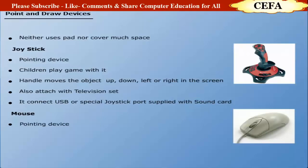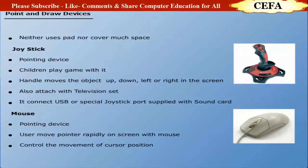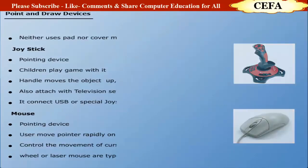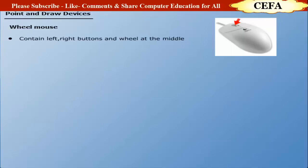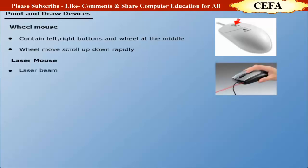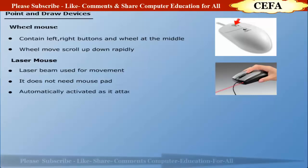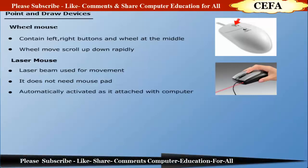Mouse is a pointing device. A user can move the pointer very rapidly on the screen with the help of a mouse. Mouse controls the movements of the cursor. There are a variety of mice available, for example wheel mouse, laser mouse, and wireless mouse. Wheel mouse contains left and right buttons and a wheel button at the middle used to scroll pages up and down. Laser mouse uses a laser beam for movement, does not need a mouse pad, and is automatically activated when attached to the computer.